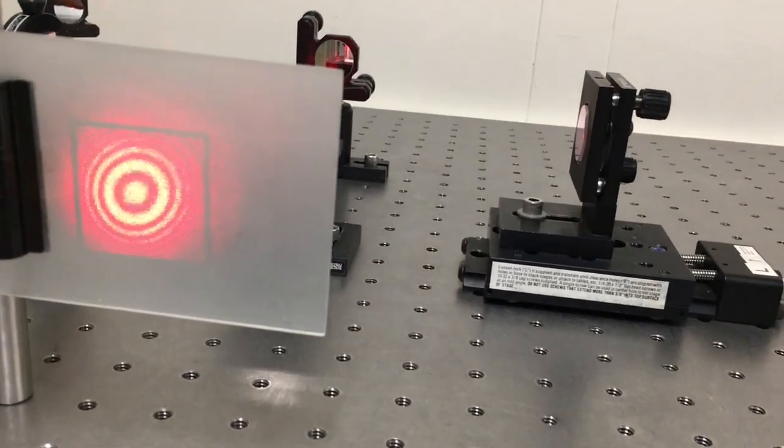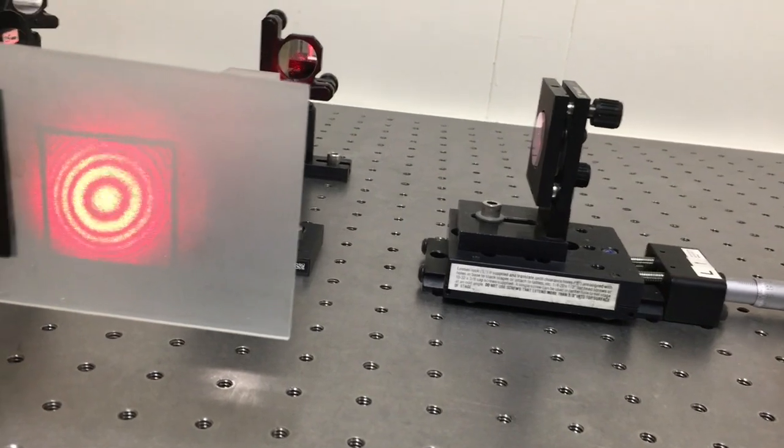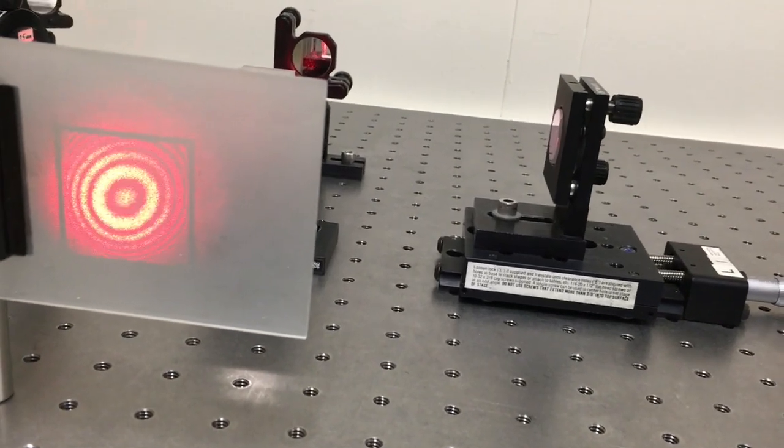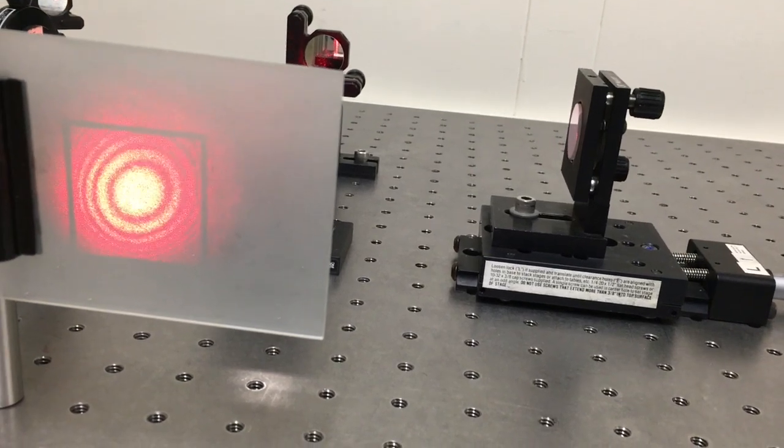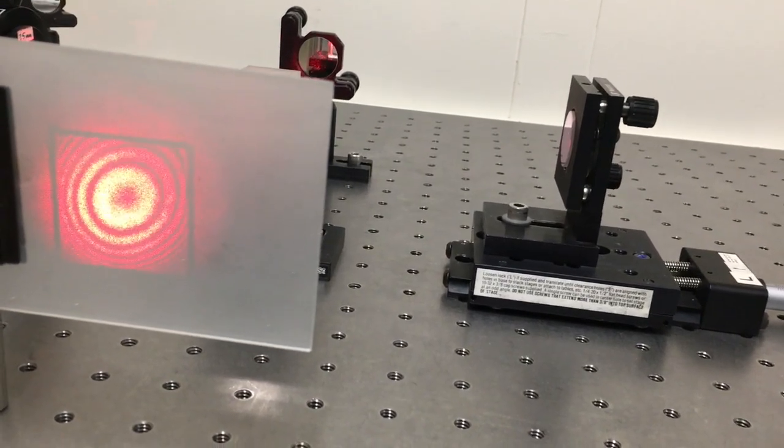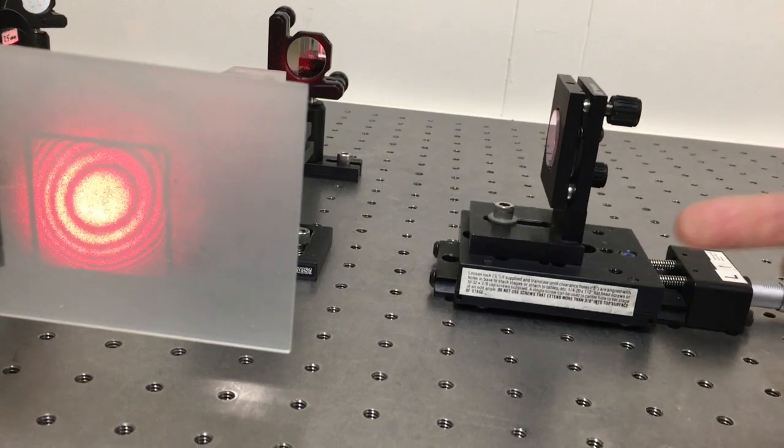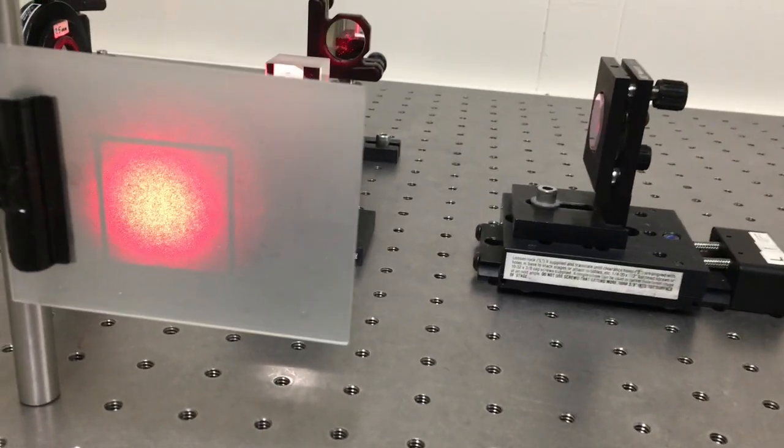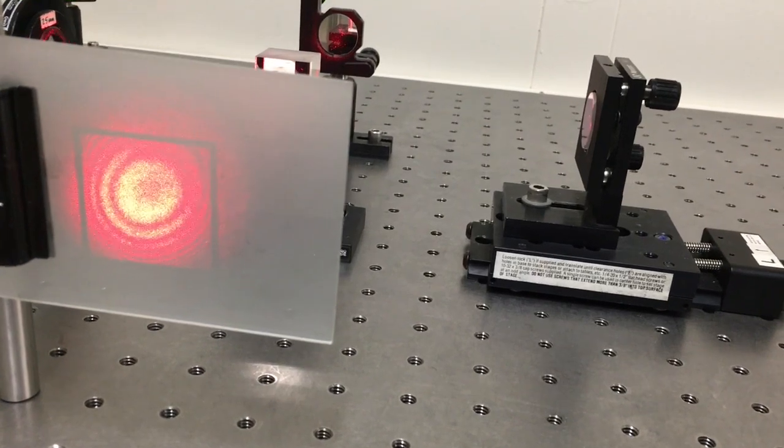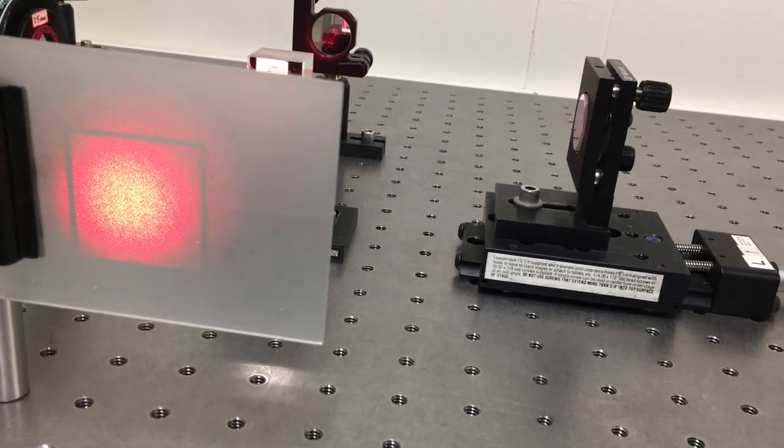The first thing you notice is as I'm turning the knob, the ring pattern becomes invisible because the fringes are flying by so quickly you can't resolve them. The second thing you notice as I move that mirror closer to the beam splitter is the ring pattern gets larger.